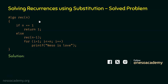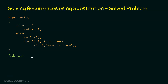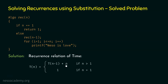The total time for the recursive case is T(N-1) + N. So the recurrence relation is: T(N) = T(N-1) + N if N > 1, and T(N) = 1 if N = 1. Now we have the recurrence relation of time.